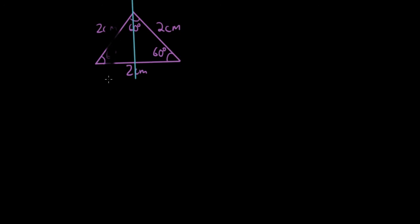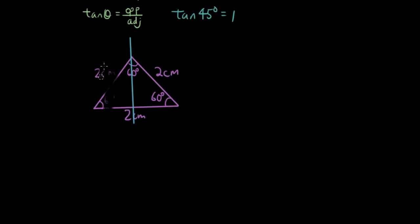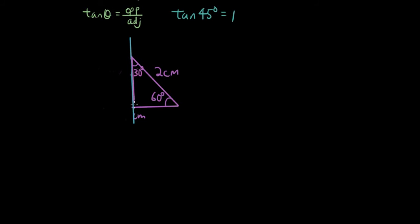I'm going to rub out the left half of this triangle and relabel what I have left on the right-hand side. This angle is now 30 degrees because it is half of the original 60. We have a right angle here, and the length along the bottom is now 1 cm — it was 2 cm, but because we've cut it in half it is now 1 cm.